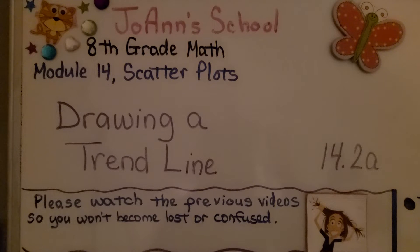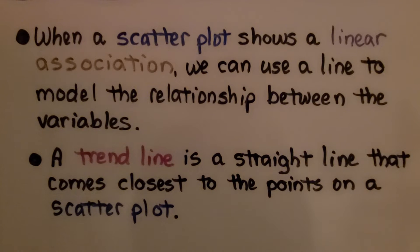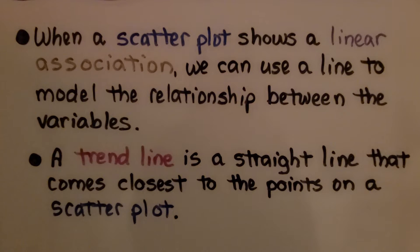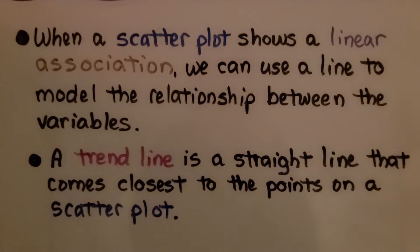Drawing a trendline, Lesson 14.2a. When a scatter plot shows a linear association, we can use a line to model the relationship between the variables. A trendline is a straight line that comes closest to the points on a scatter plot.